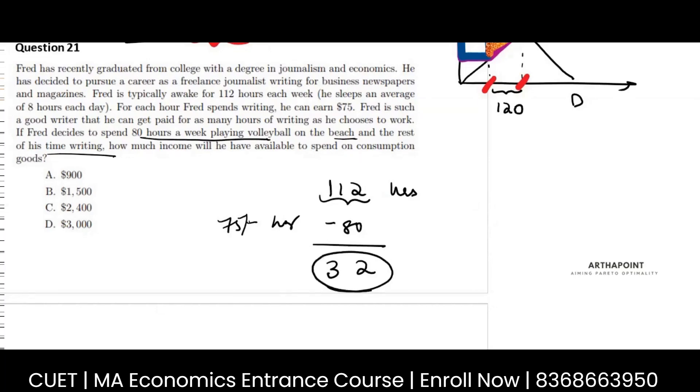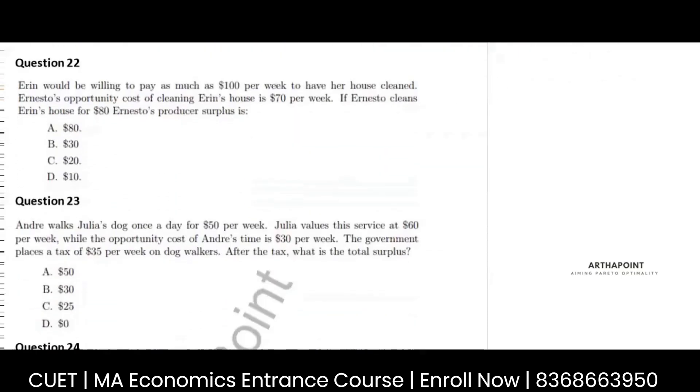He only works for the remaining hours. And for the number of hours he works, he gets 75. So you just multiply that and get the answer. Come to the next question.